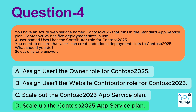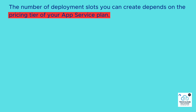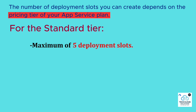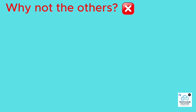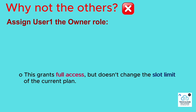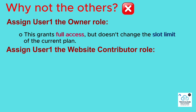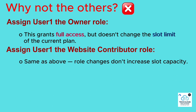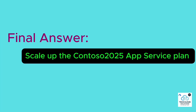Correct answer: The number of deployment slots you can create depends on the pricing tier of your app service plan. For the standard tier, the maximum is five deployment slots. To create more than five slots, you must scale up to a higher pricing tier such as Premium V2 or Premium V3, which support up to 20 deployment slots. Why not the others? Assigning User1 the owner or website contributor role grants access but doesn't change the slot limit of the current plan. Scaling out increases instance count (horizontal scaling), not the number of deployment slots. Final answer: Scale up the Contoso 2025 app service plan.